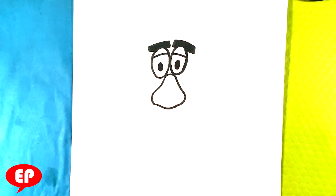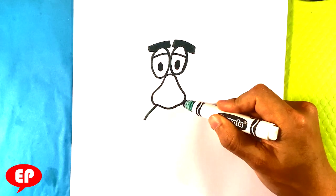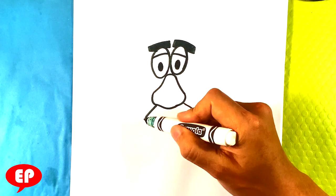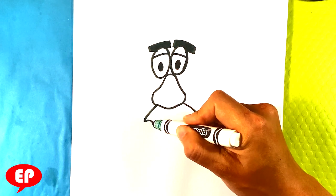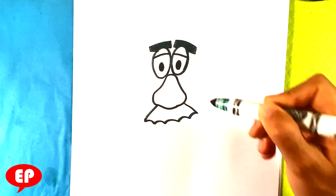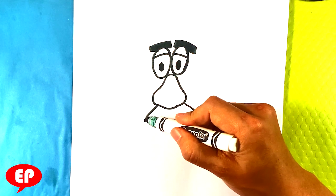Alright I'm gonna go down here, draw a line out, line out for the mustache. I'm gonna draw these curved lines here for the end of the mustache and I'm gonna fill that in.